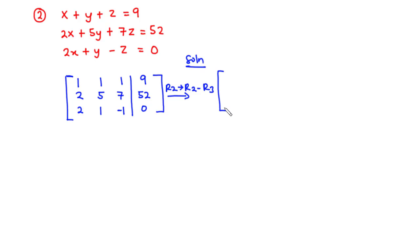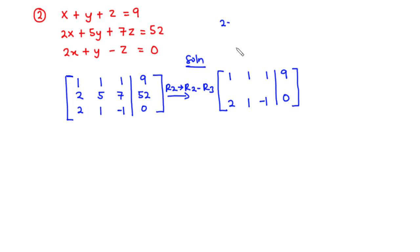Performing row 2 minus row 3: row 1 and row 3 remain the same — [1, 1, 1 | 9] and [2, 1, -1 | 0]. For the new row 2: 2 minus 2 equals 0; 5 minus 1 equals 4; 7 minus negative 1 equals 8; and 52 minus 0 equals 52. So the new row 2 is [0, 4, 8 | 52].